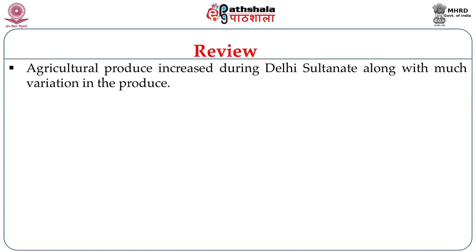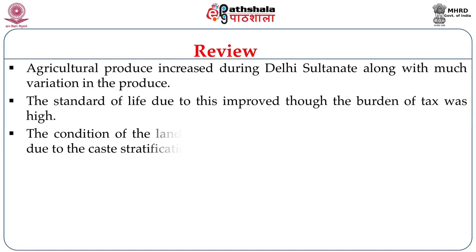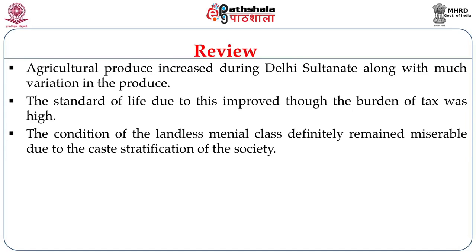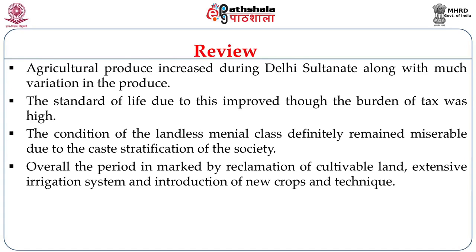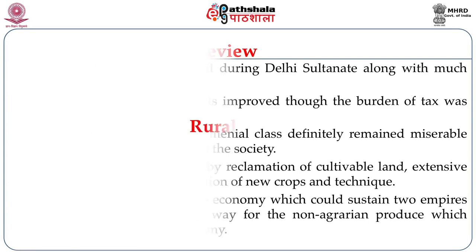Agricultural produce thus increased during the Delhi Sultanate period, along with much variation in products. The standard of life improved due to this, though the burden of tax was very high. The condition of the landless menial class definitely remained miserable due to caste stratification of society. Overall, the period is marked by reclamation of cultivable land, extensive irrigation systems, and introduction of new crops and techniques, laying the foundation of an economy which could sustain two empires back-to-back and pave the way for non-agrarian production.